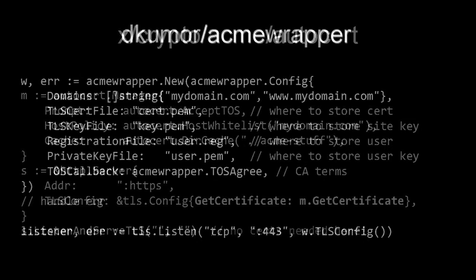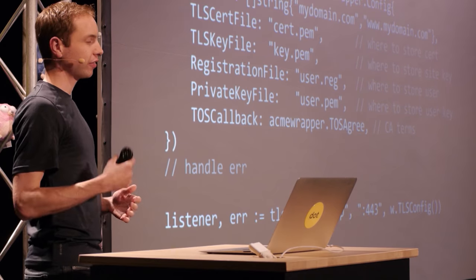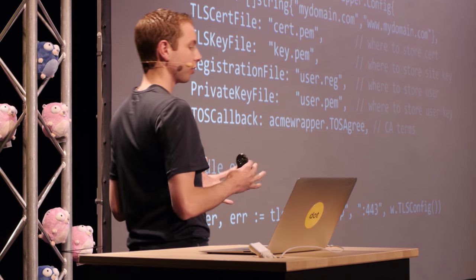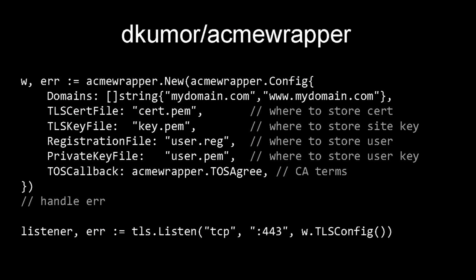DekeHumor's Acme Wrapper is another option that's very simple and easy to use. You create a new Acme Wrapper with certain config properties, pass in the domain names you want on the certificate, and specify a certificate and key file location. When using ACME, there's also the notion of user accounts with the certificate authority, so you have to specify where to store those assets so you can reuse them. Its output is an entire TLS config that you can pass into tls.Listen.